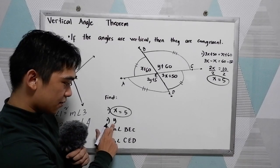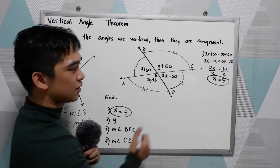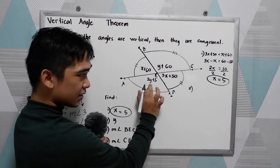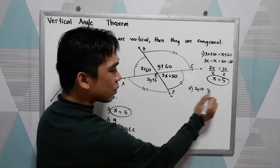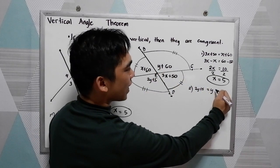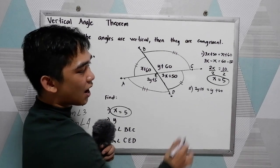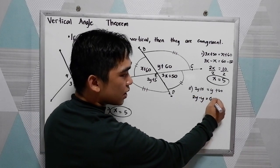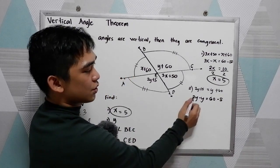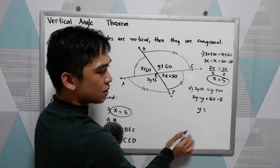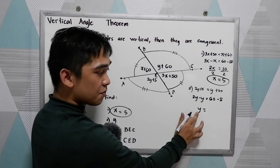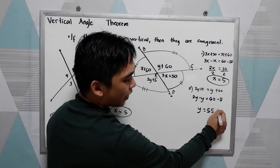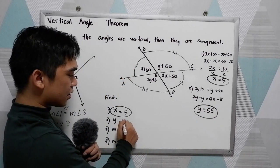Number 2, find y. Applying the vertical angle property: 2y plus 5 equals y plus 60. Solving for y: 2y minus y equals 60 minus 5, so y equals 55.